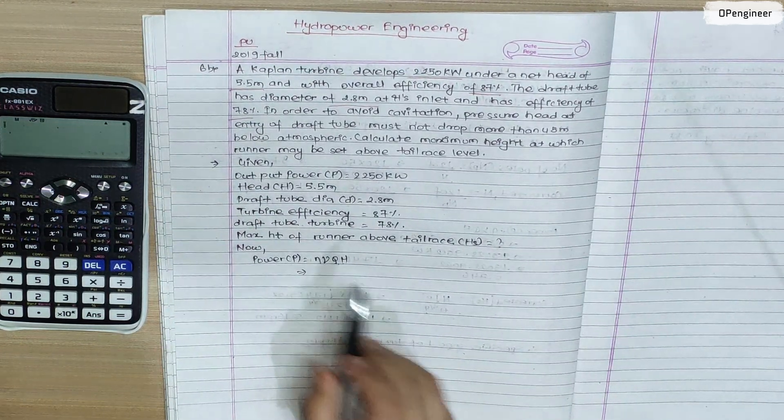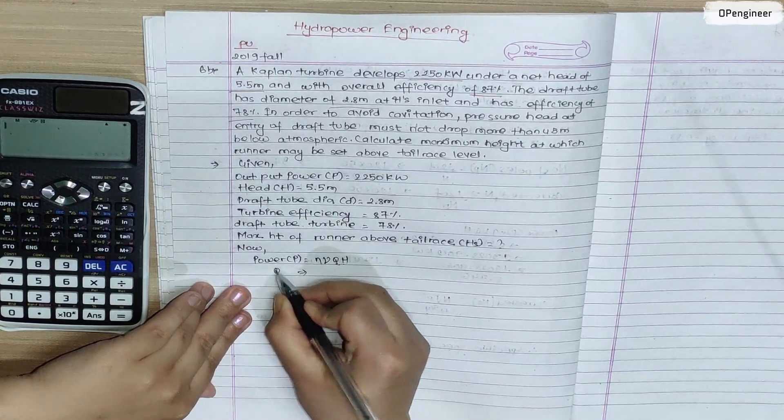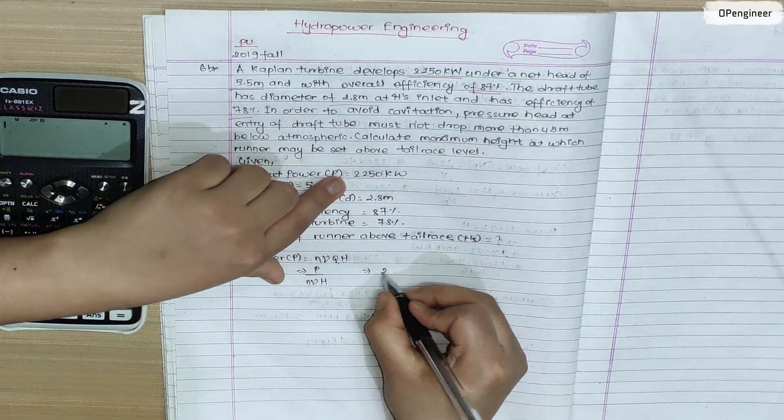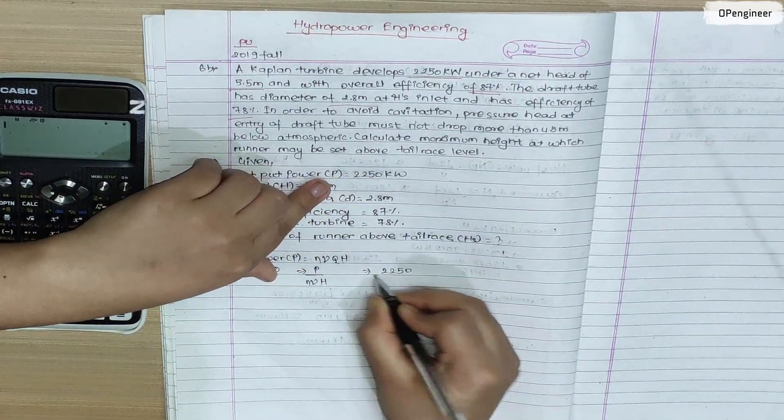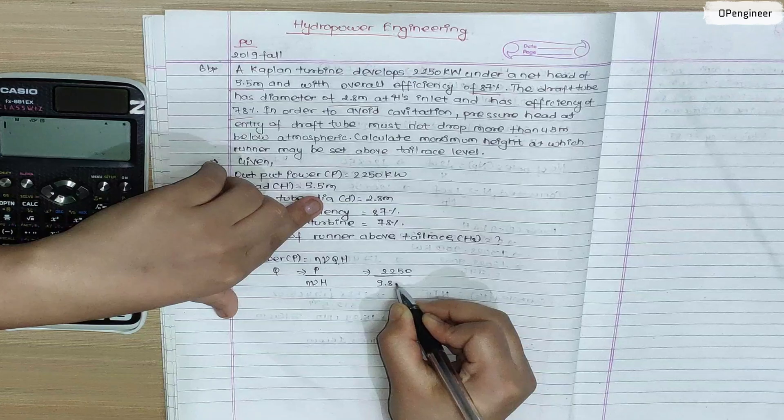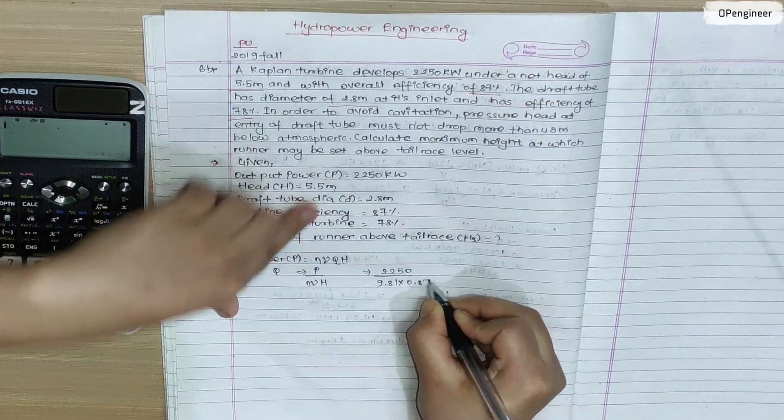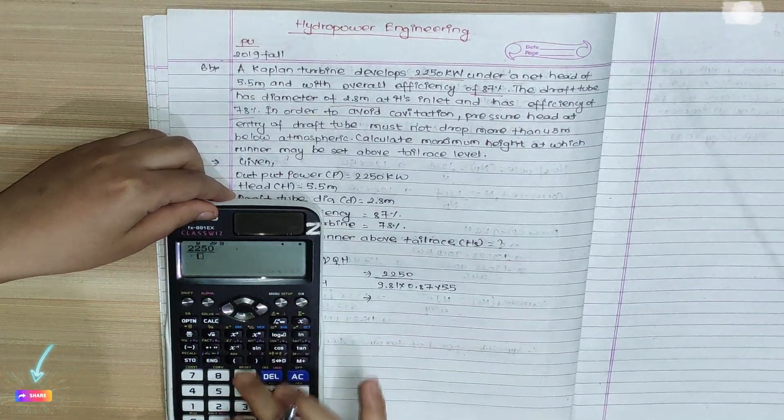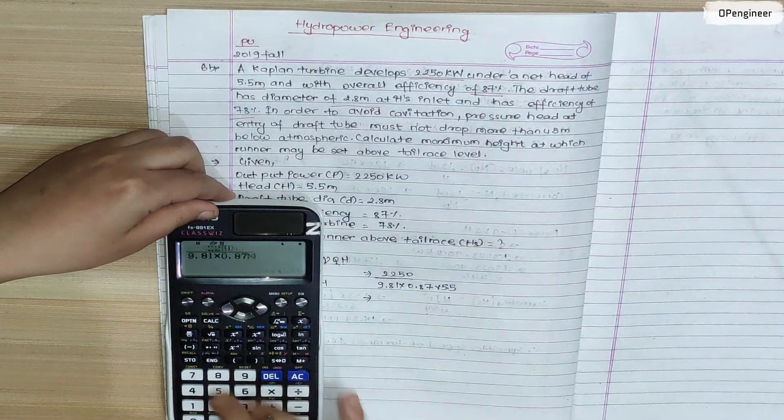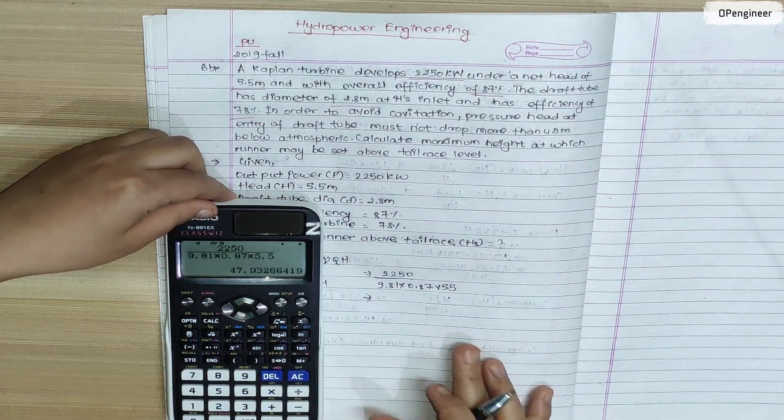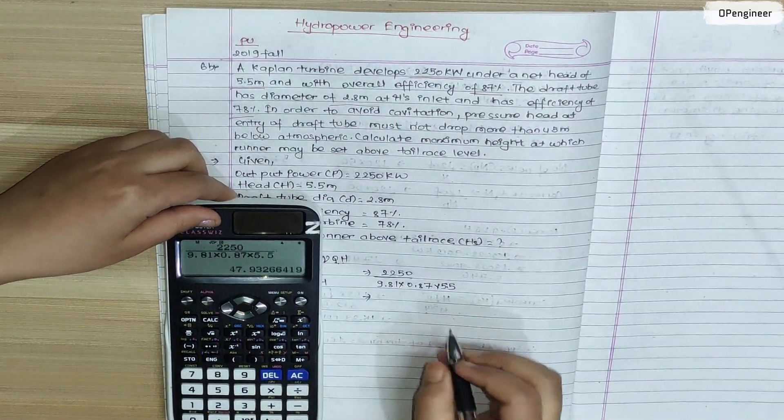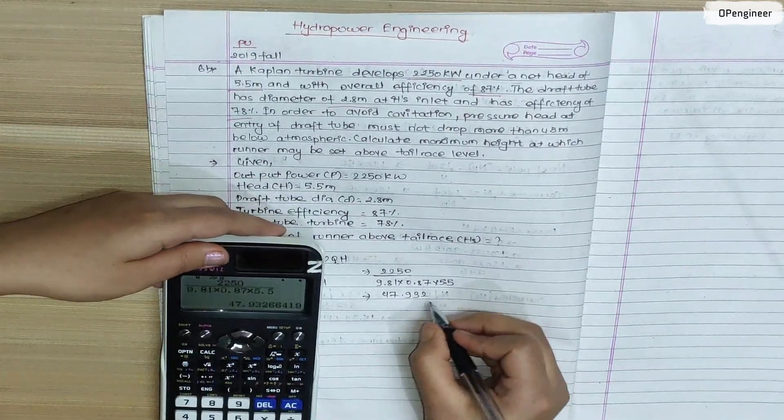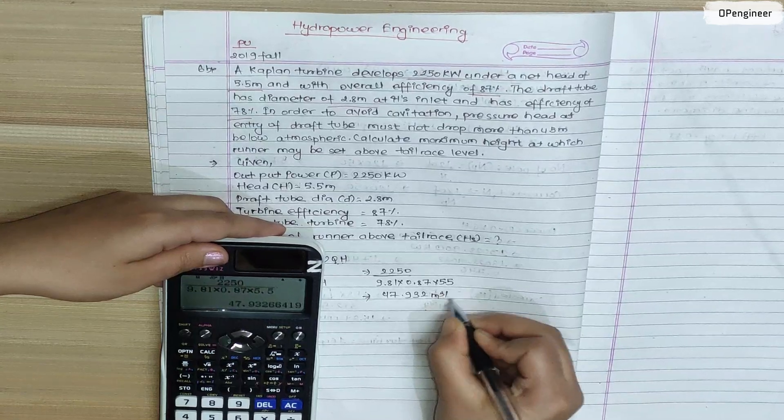If we calculate the value, we get the discharge Q. After calculation, Q equals 47.932 cubic meters per second.